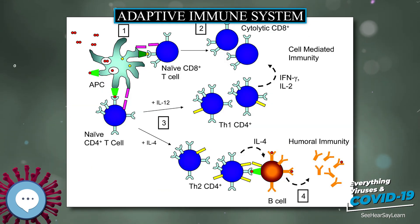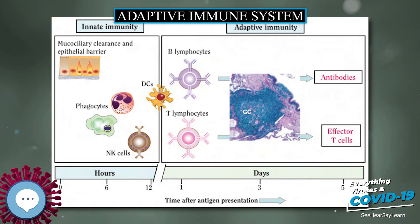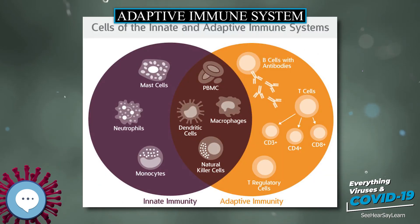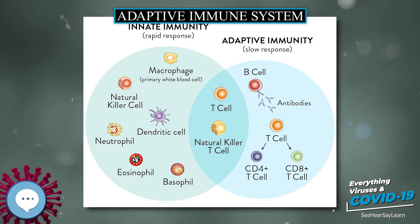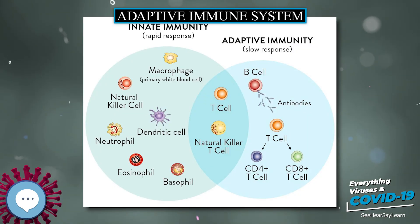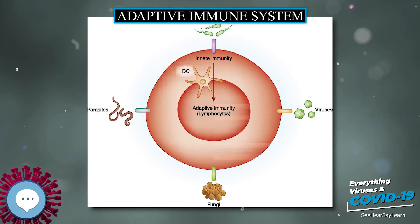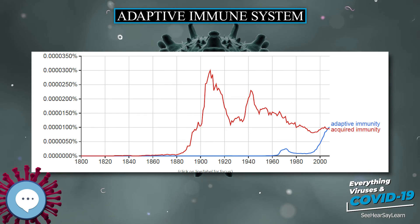Short-term passive immunity can also be transferred artificially from one individual to another via antibody-rich serum. In general, active immunity is long-term and can be acquired by infection followed by B cell and T cell activation, or artificially acquired by vaccines in a process called immunization. Historically, infectious disease has been the leading cause of death in the human population. Over the last century, two important factors have been developed to combat their spread: sanitation and immunization.